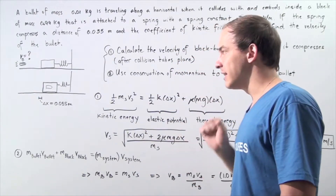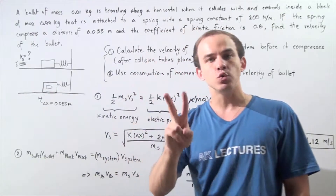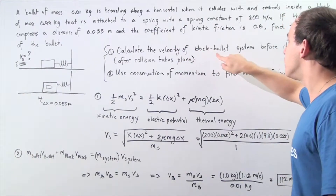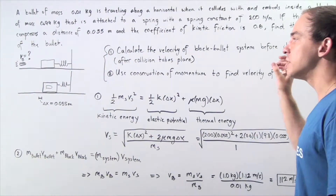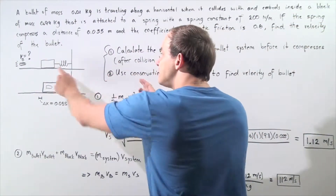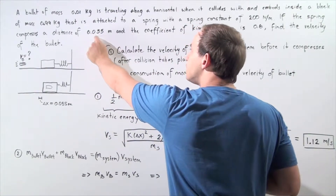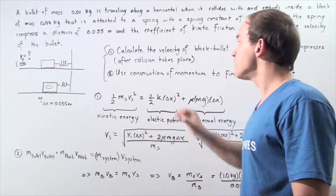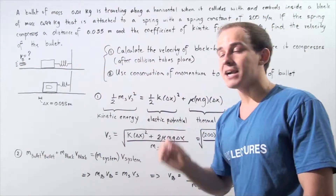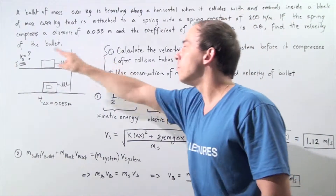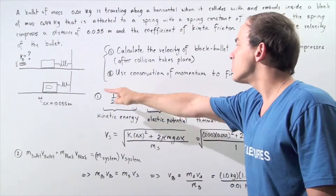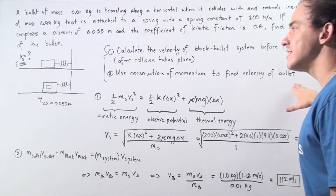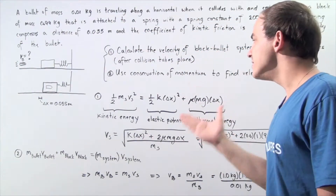We want to calculate the velocity of the bullet in two steps. In step one, we calculate the velocity of the bullet-block system right before the spring compresses — that is, right after the collision takes place, when the block moves a distance of 0.055 meters. Knowing that velocity, we can then use conservation of momentum to find the velocity of the bullet.